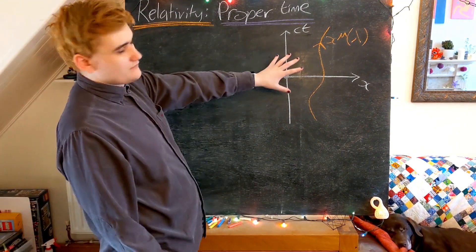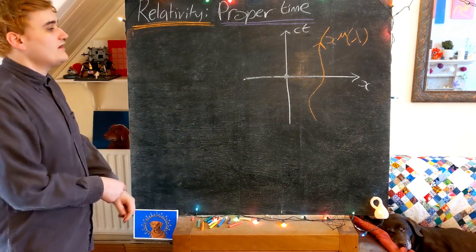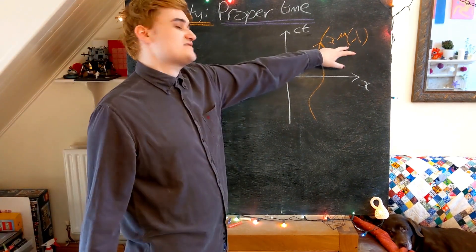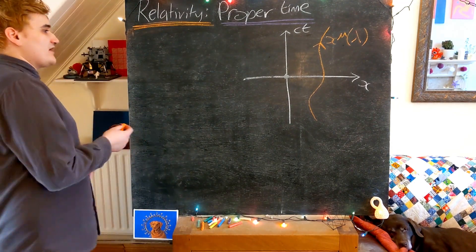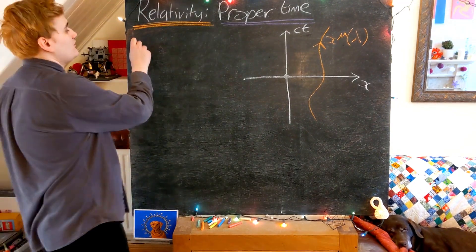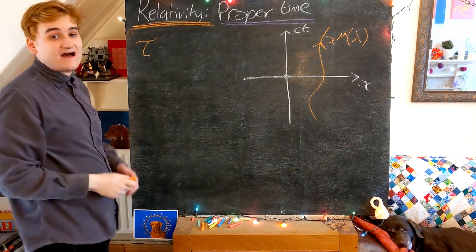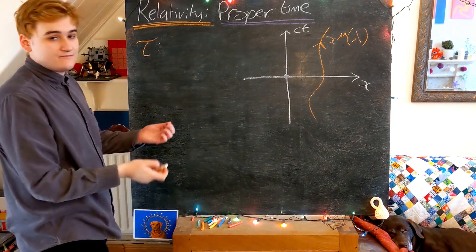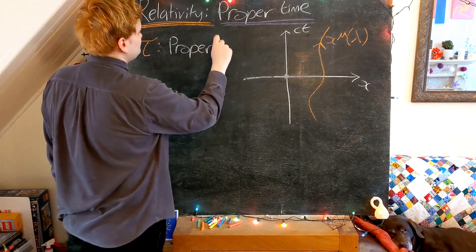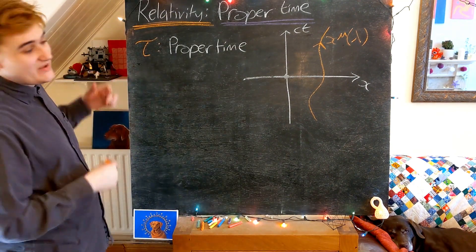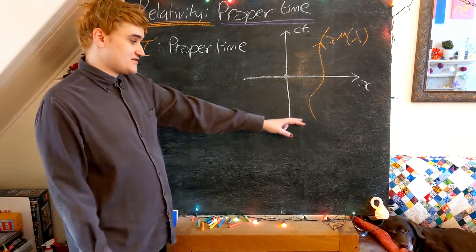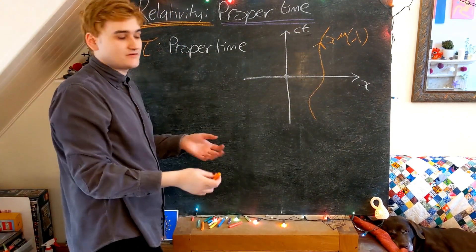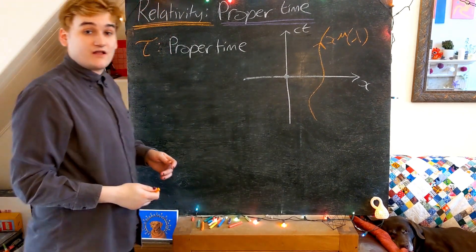So the way that we're going to parameterize this curve is by essentially identifying a new choice of parameter. Instead of lambda, we're going to define a parameter which we're going to call tau, which is going to have the name proper time. And what this tau is going to be is essentially just the time that you would measure if you were this particle traveling along this world line.